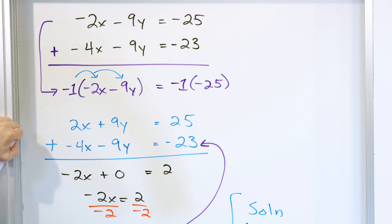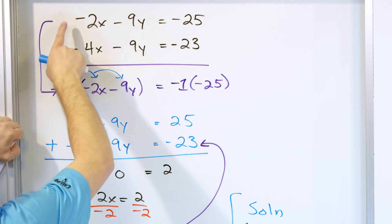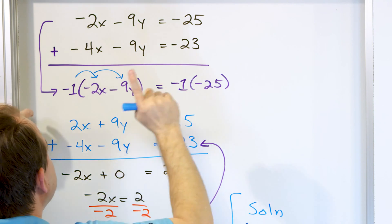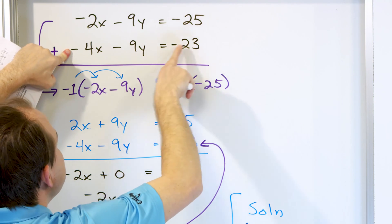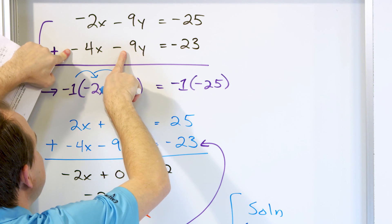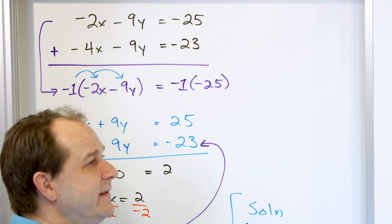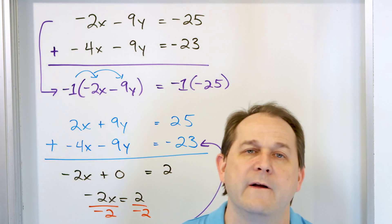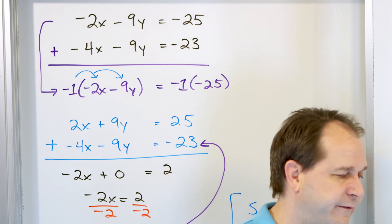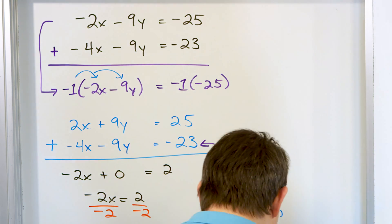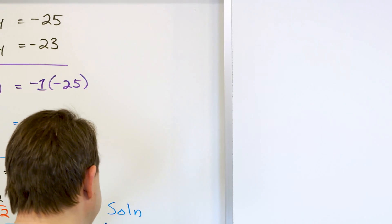By multiplying by negative 1, I flip the sign so that when I add, the terms cancel. Now, I don't have to multiply the first equation by negative 1 — if I wanted to, I could instead multiply the second equation by negative 1, flip its sign, and add them together. If you go through it, you're going to get exactly the same answer. As long as you're doing legal things, you will always get the same answer, so don't stress about which one to work with.